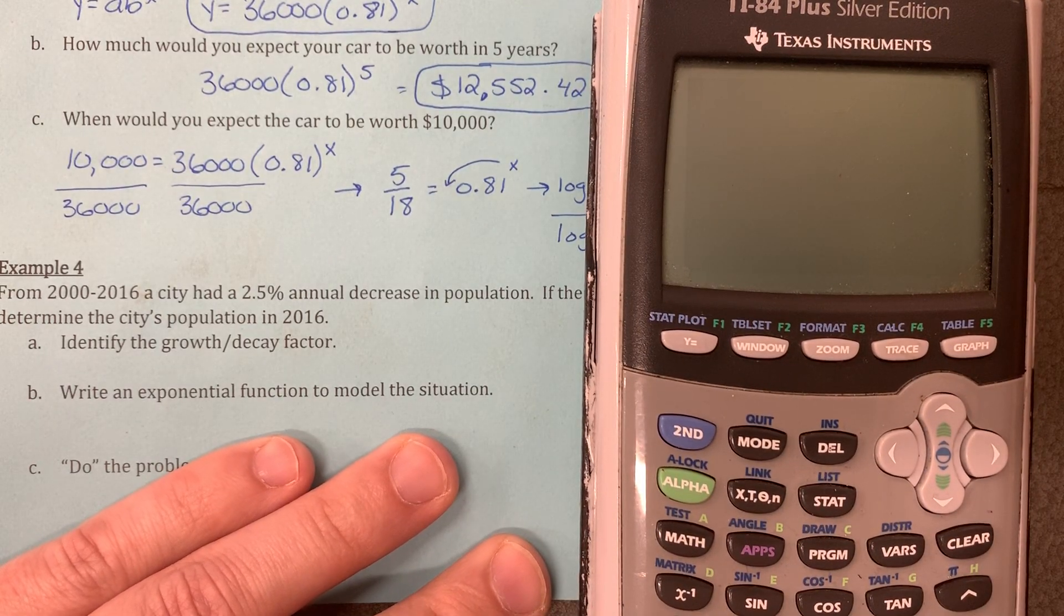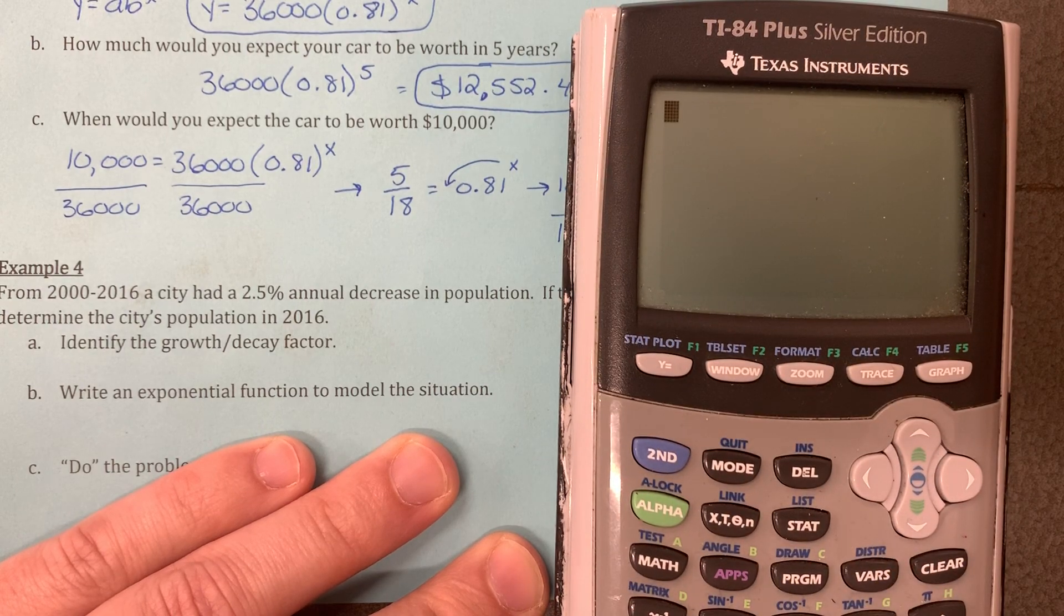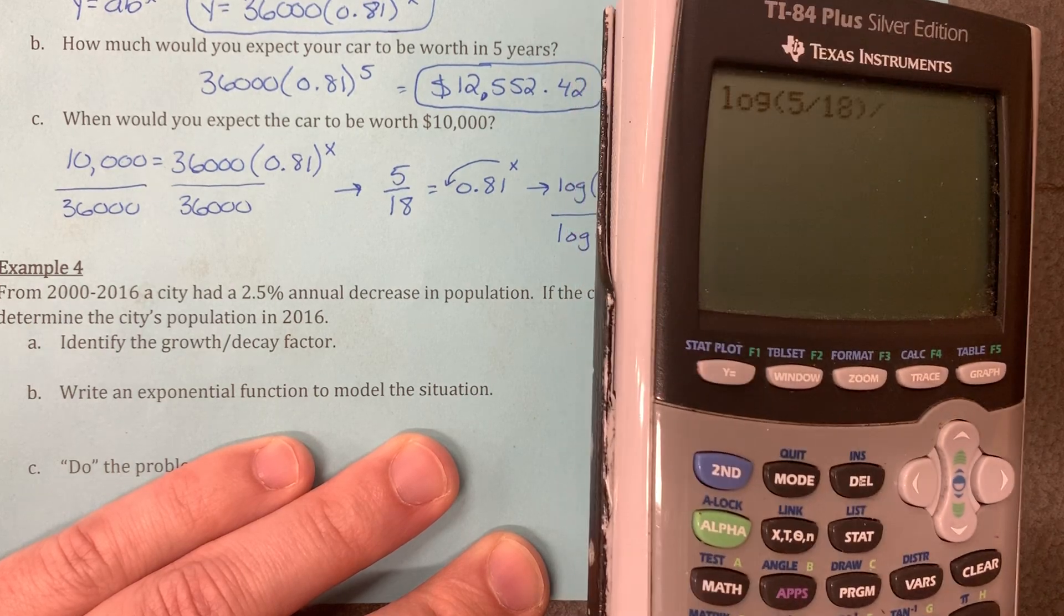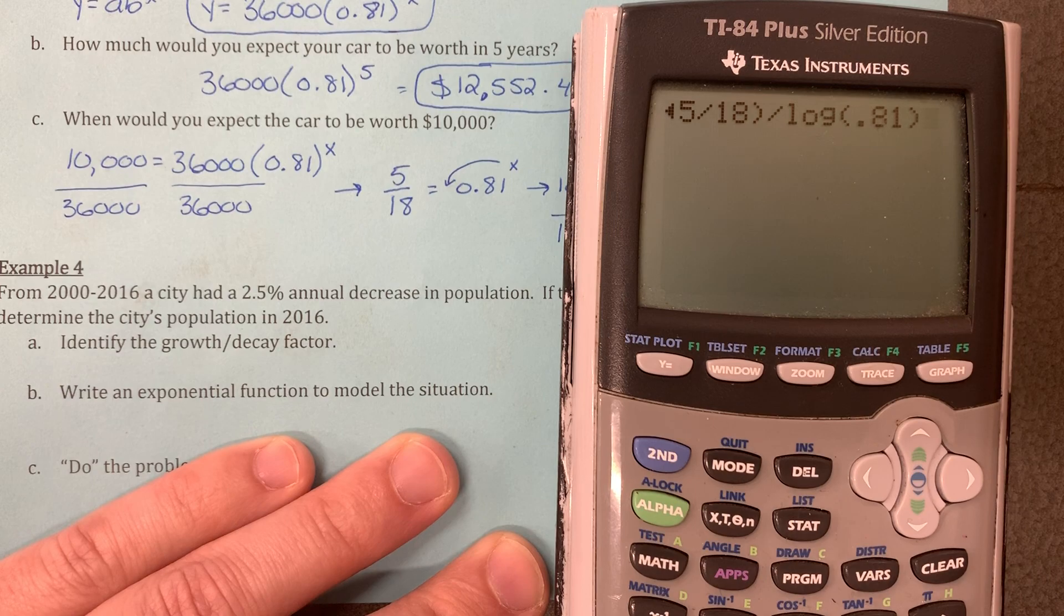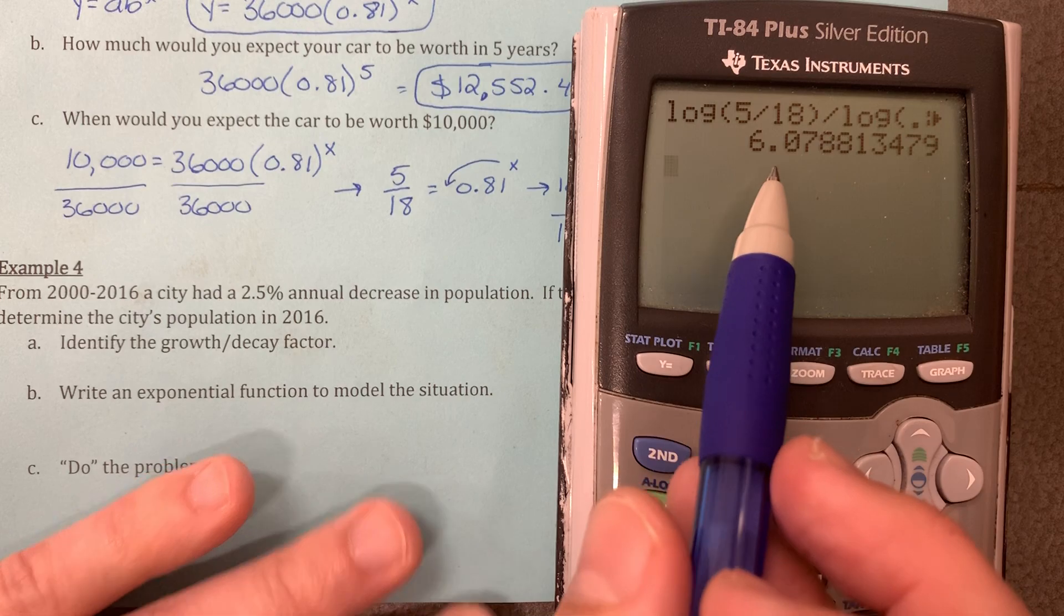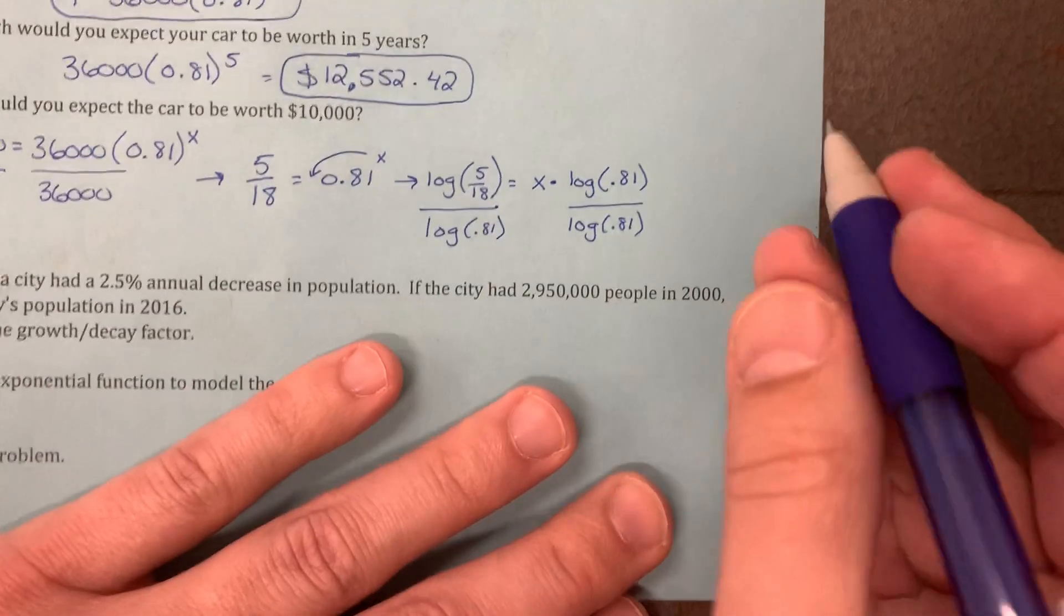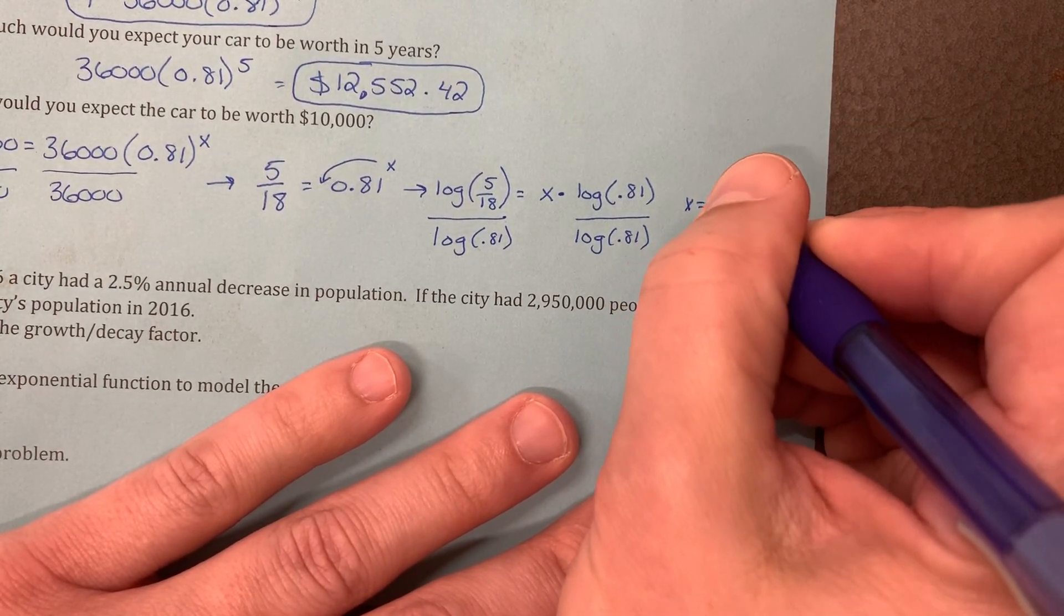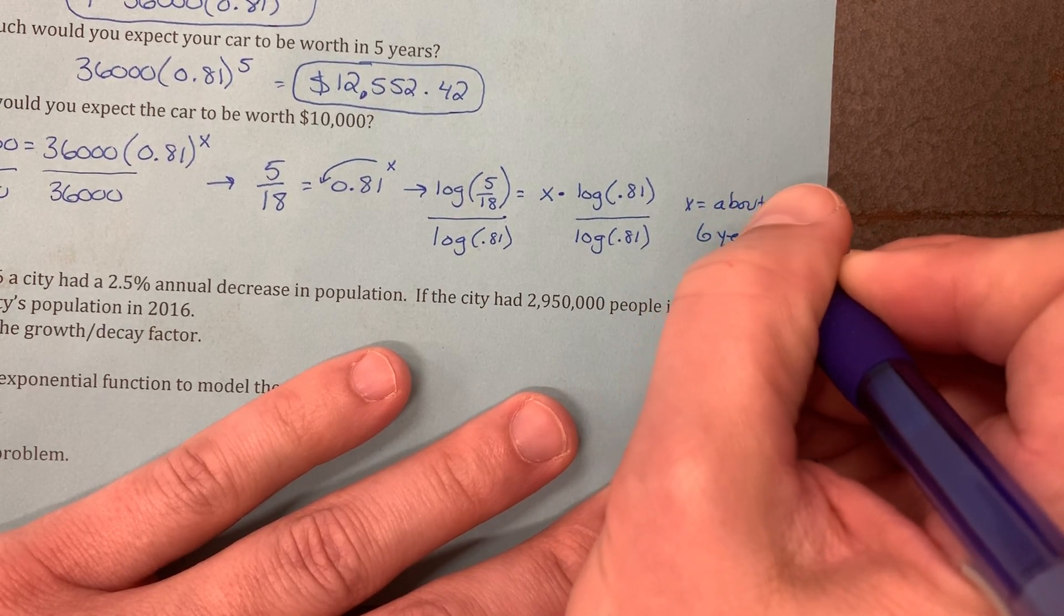In the calculator, we can say log, and that's on the left-hand side right here, log of 5 18ths divided by log of 0.81. And we were trying to figure out how many years it would take, so it looks like it's going to take about 6 years. And so we can say x equals about 6 years.